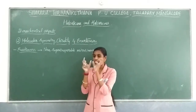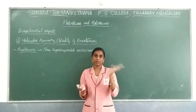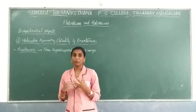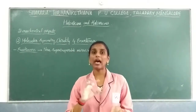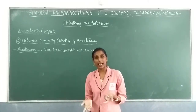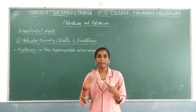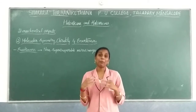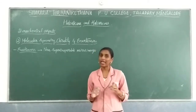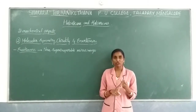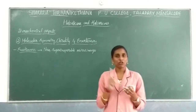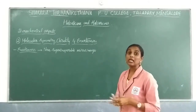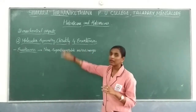Enantiomers will show rotation — both plus and minus rotation will be seen. The physical properties of enantiomers are identical — melting point, boiling point, refractive index — almost all properties will be the same. Examples of enantiomers include lactic acid and chlorobutane. These are examples for enantiomers, and the same examples can be written for chiral structures.